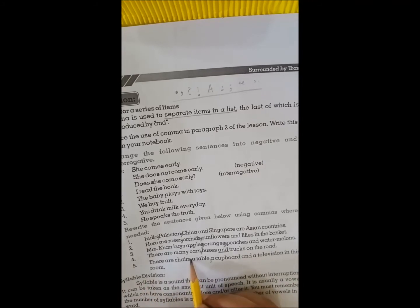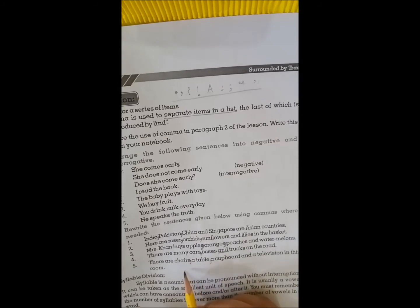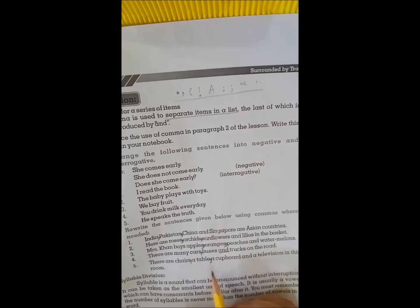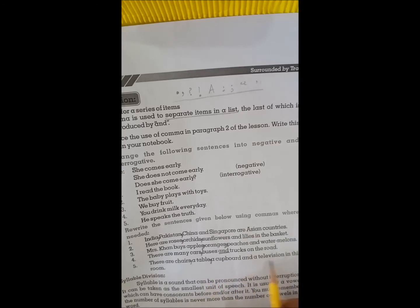There are chairs, a table, a cupboard and a television in this room. After chairs we will put a comma, after a table we will put a comma. A cupboard and a television has 'and' between them, therefore we will not put a comma here.